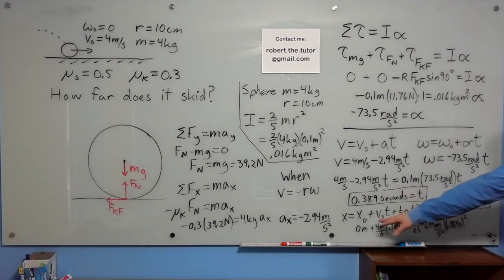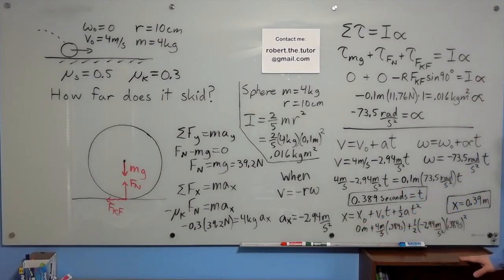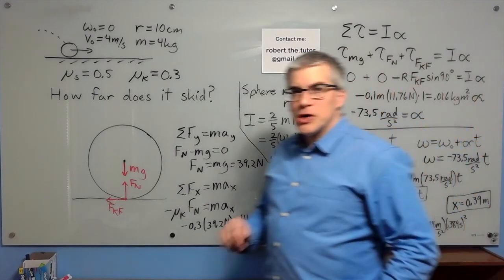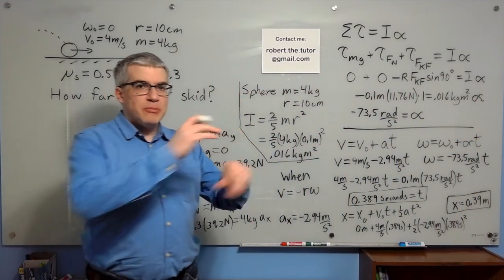And when we plug that into regular kinematics for X, we get 0.39 meters. That is how far the bowling ball skids before it starts rolling.